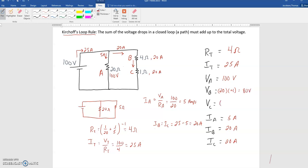And I can do V equals I times R. So I can do 20 amps times 1 Ohm. And I get 20 volts.